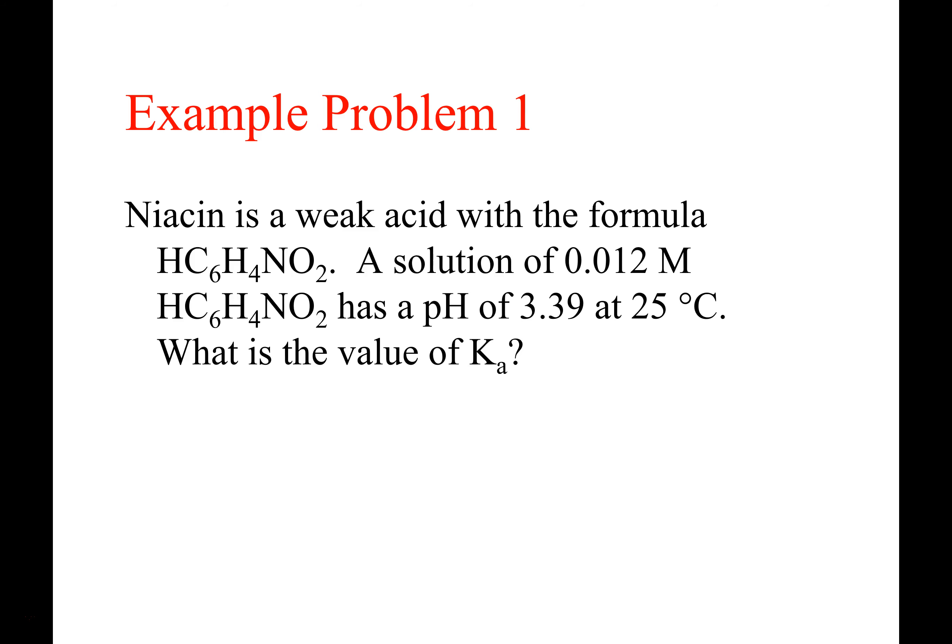We're dealing with a weak acid. The formula of the weak acid is HC₆H₄NO₂. You're going to see the equilibrium here in a minute. When I see this, I usually think this H right here — that's going to be the proton that kicks off. We're going to show on the product side the H⁺ and then C₆H₄NO₂⁻ with a minus one. The solution was prepared to be 0.012 molar in this weak acid. Notice it's acidic.